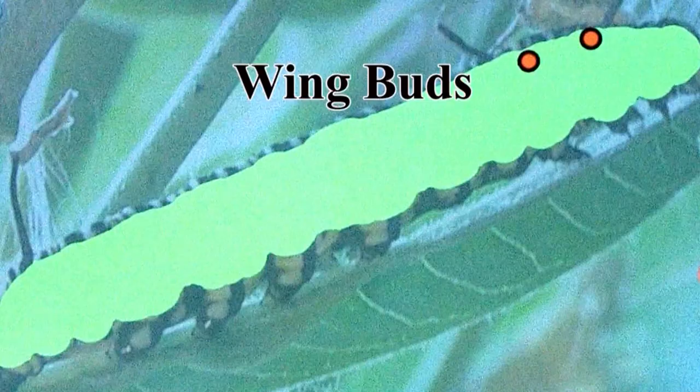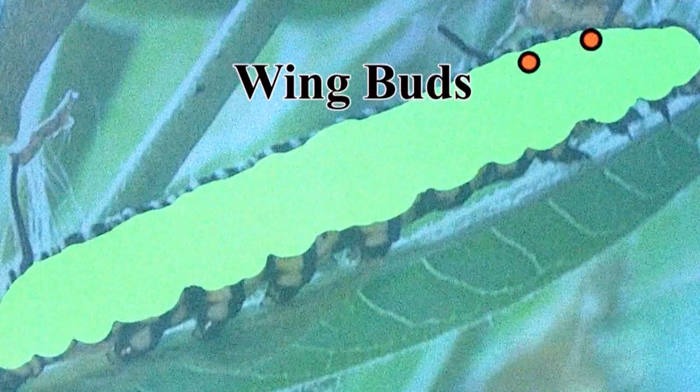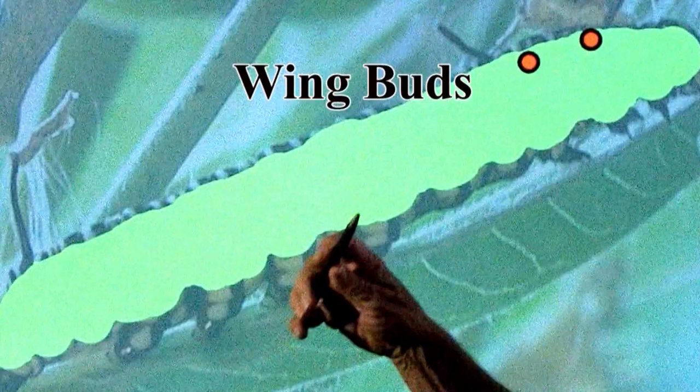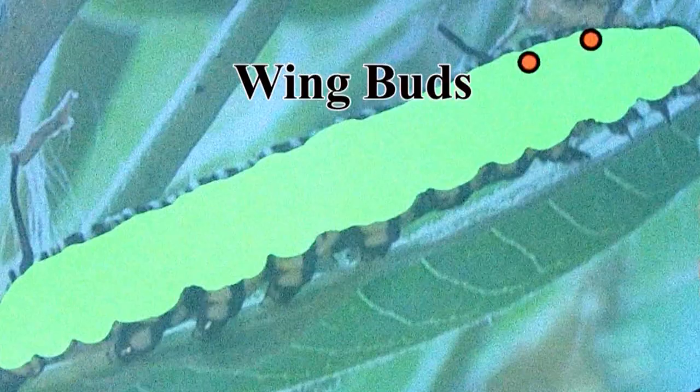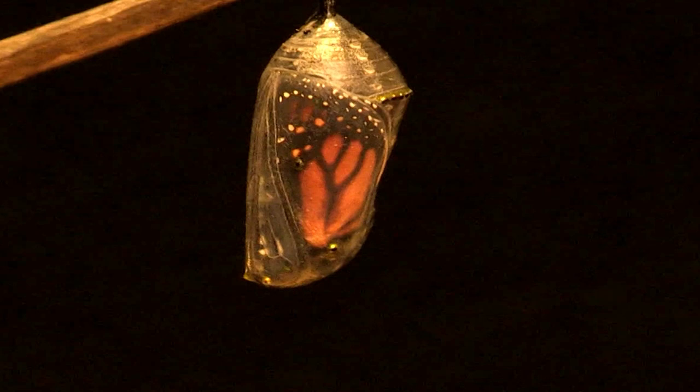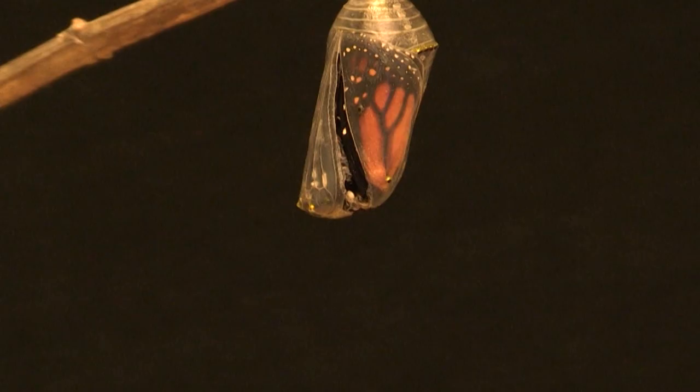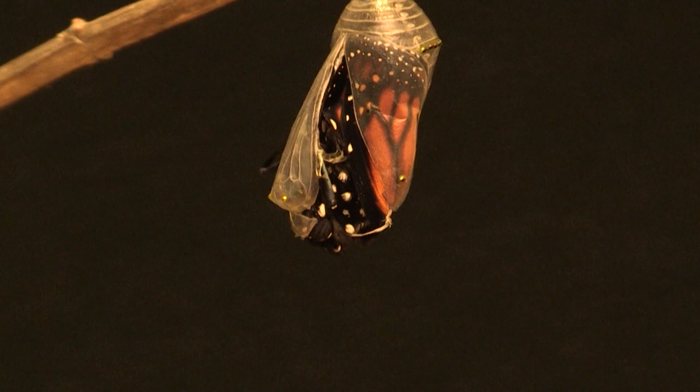These are wing buds — congregations of cells that are waiting their turn to develop into wings. There are two pairs of wing buds in the caterpillar. They serve no function now, but in the chrysalis they will literally explode into the wings of the adult butterfly.